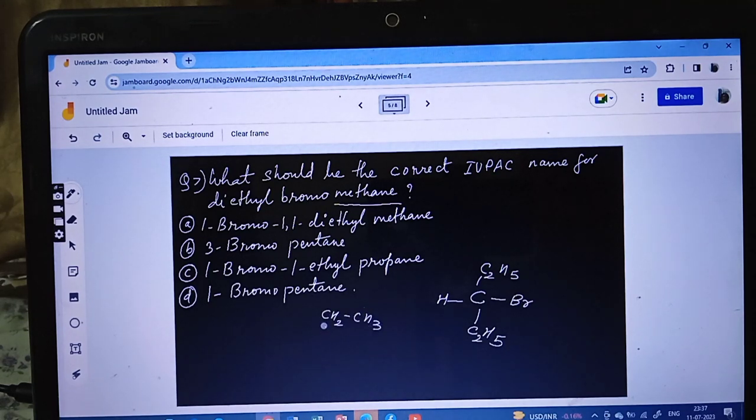C2H5 which is ethyl, we can write as CH2-CH3. Single bond C-H-Br, and here also we can write CH2-CH3. Now find the longest carbon chain: 1, 2, 3, 4, 5. That means 3-bromopentane is coming.